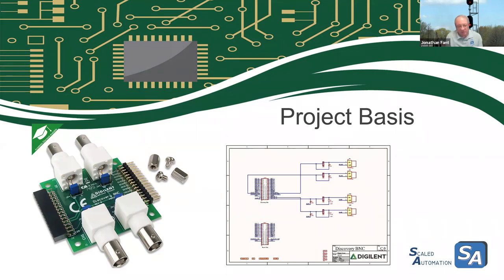On the original board, the BNC connectors point in opposite directions, which won't work for a front panel. The expansion port for digital I/O would also be inaccessible. So we're making our own custom PCB that rearranges the components. One added feature: the blue jumpers on the original will become switches instead, making the device easier to use. Digilent publishes the schematic, so we just need to enter it into Eagle.